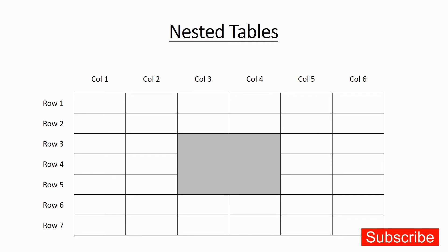Hello everyone, welcome back. This is Ajay and today's tutorial we are going to learn how to have nested tables in HTML. In my previous tutorial we learned how to use rowspan and colspan, and how we can merge a set of columns and rows together. That was the example we took last time and I showed you how to write the HTML code to generate a table with columns three and four and rows three, four, and five merged all together.